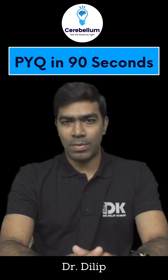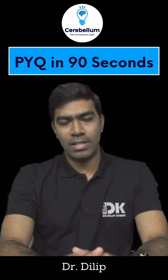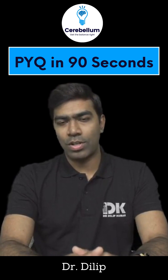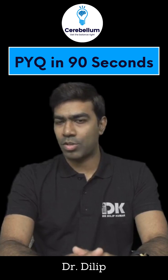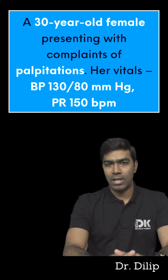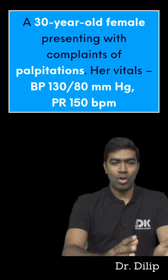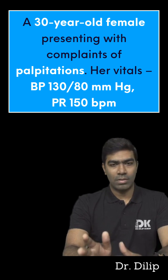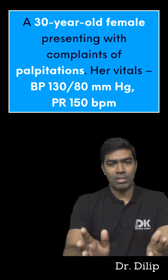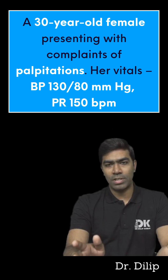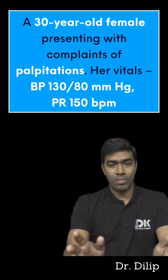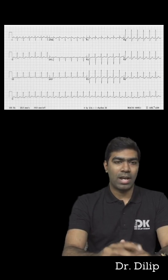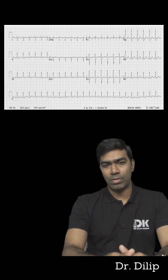Hey guys, welcome to Cerebellum's PYQ 90-second series. Today we're going to discuss a very common case that's asked in exams regularly. You have a 30-year-old female presenting with complaints of palpitations to the emergency. Her vitals are apparently stable except for the pulse rate, which is 150 beats per minute, and the ECG is shown below.